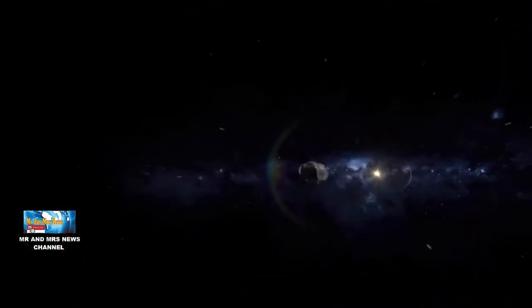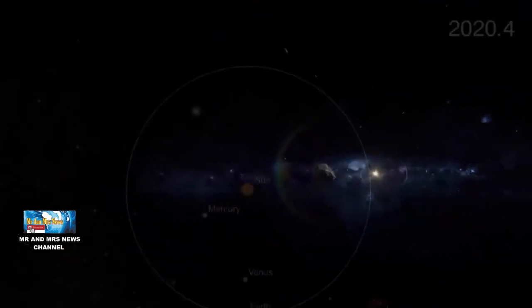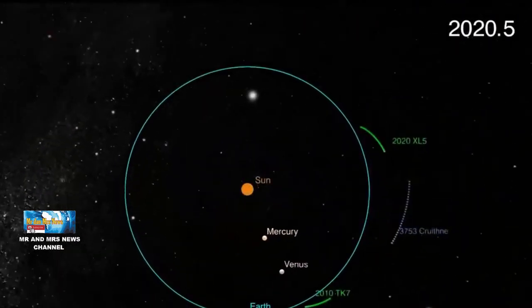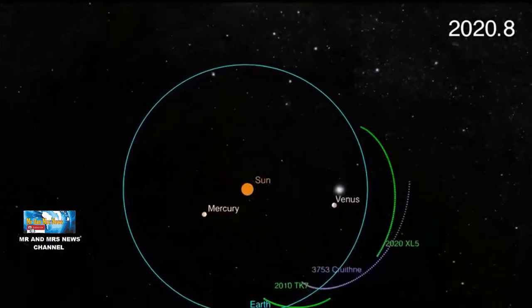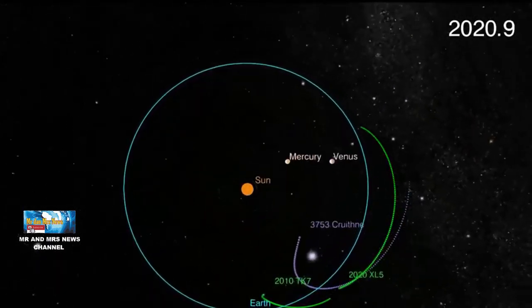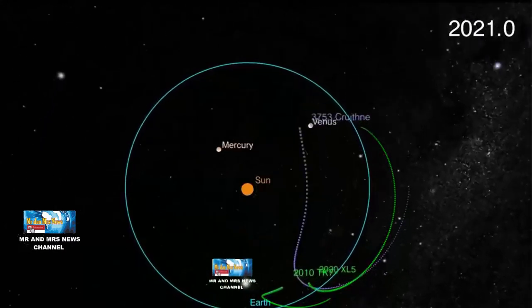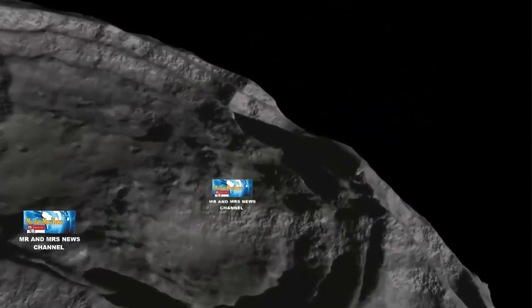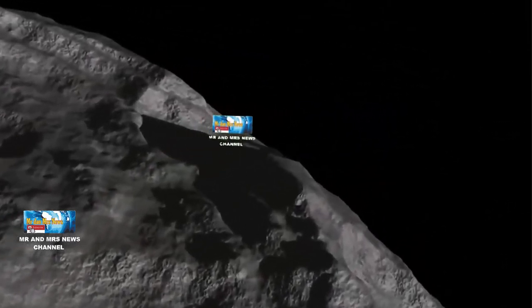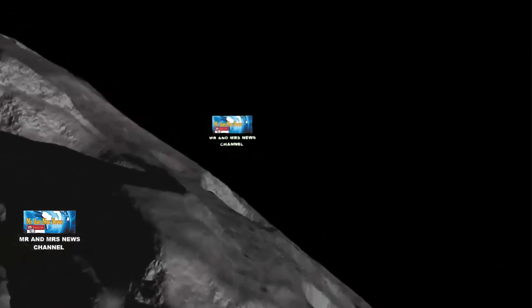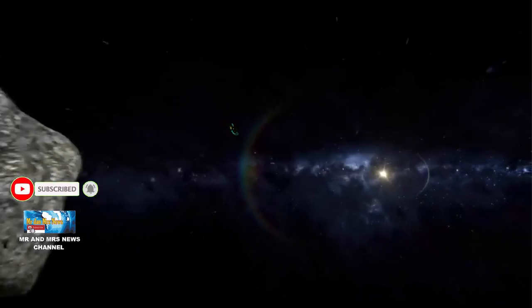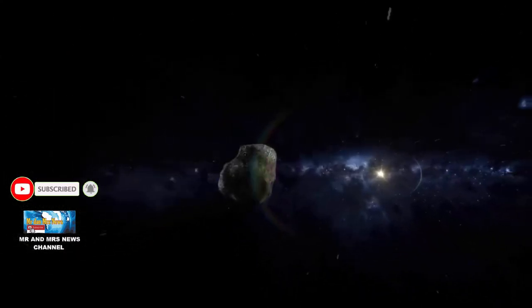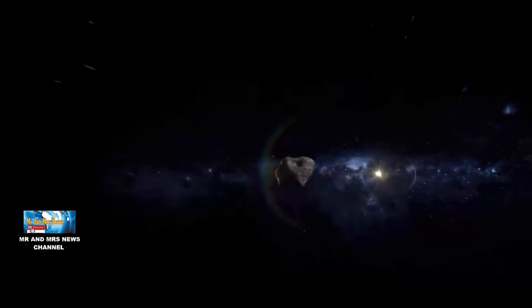Lebih lanjut, Trojan bumi lainnya bernama 2010 TK7 yang merupakan bongkahan batu dengan diameter sekitar 300 meter. Kendati begitu, dalam waktu sekitar 15.000 tahun interaksi gravitasi akan menendang keluar dari orbitnya saat ini. Asteroid 2020 XL5 sangat mirip yang juga melakukan librasi di sekitar L4 dan hanya akan berkeliaran secara sementara.